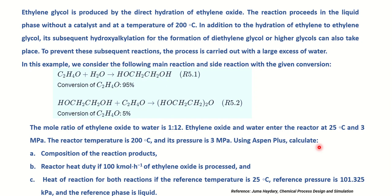Hello everyone. In this video tutorial we are going to simulate a conversion reactor in Aspen Plus. The problem statement: ethylene glycol is produced by the direct hydration of ethylene oxide. Ethylene oxide reacts with water to produce ethylene glycol, and the conversion of ethylene oxide is 95% in this reaction.